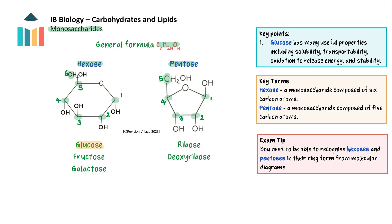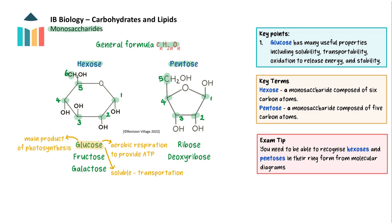Glucose is a particularly important monosaccharide in nature. It can be completely broken down in aerobic respiration to form a large number of ATP molecules. It is the main product of photosynthesis and it is soluble, making it easy to transport.